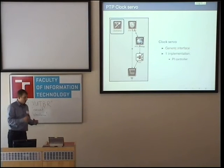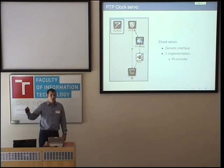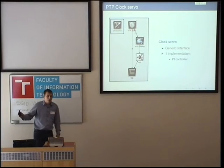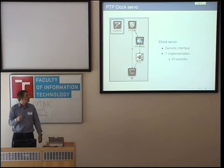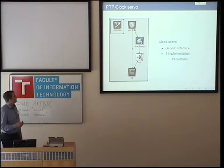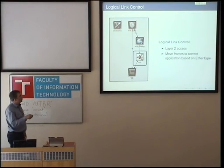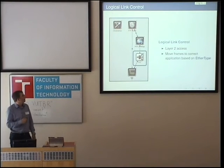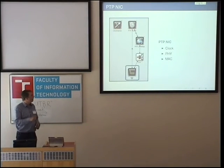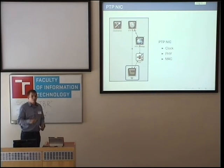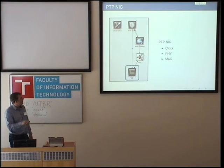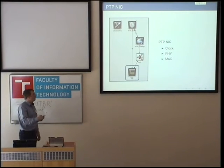When a slave clock has an estimate of how wrong it is relative to the master, it needs to correct the local clock. There are many different approaches on how this could be done, and for my simulation I implemented a simple PI controller. I also needed some glue logic to attach my application to the Ether type specified in 1588. I modeled a network interface card with a clock model as described — it has a model of a PHY so I can simulate different PHY latencies, and an extension of the INET MAC with timestamping capabilities.